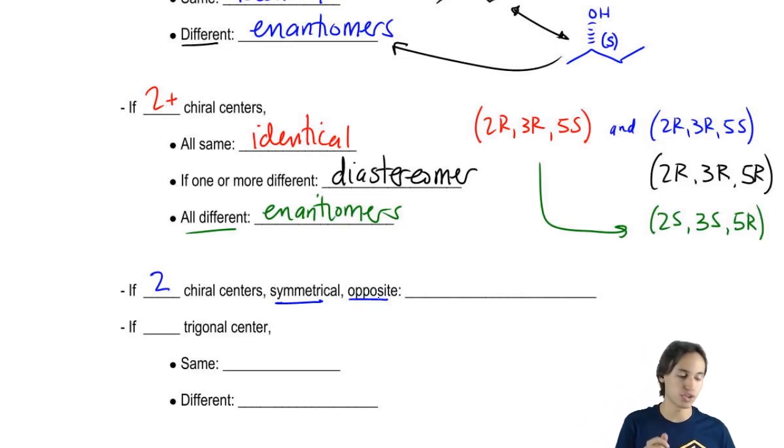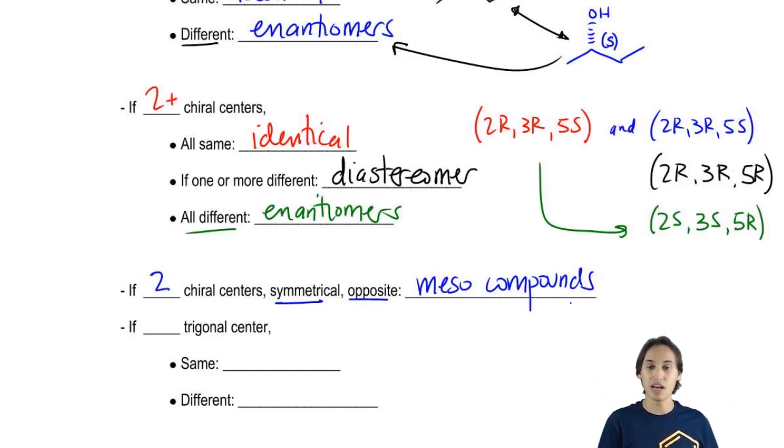If we have two chiral centers that are symmetrical and opposite to each other, that's going to be meso compounds. Remember we discussed that meso compounds are kind of an exception where they have two chiral centers but they cancel out because they're opposite.